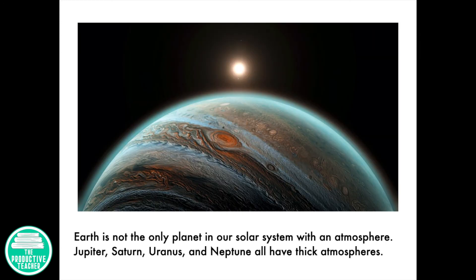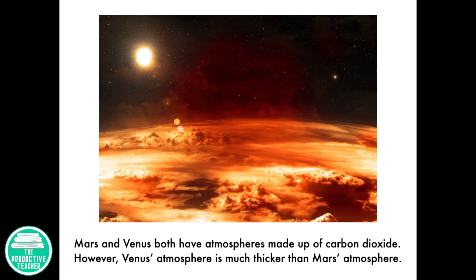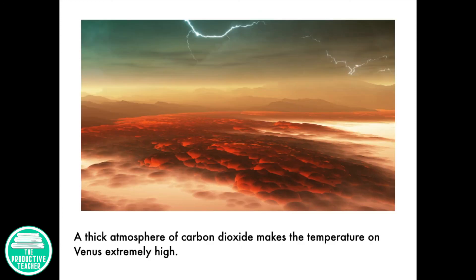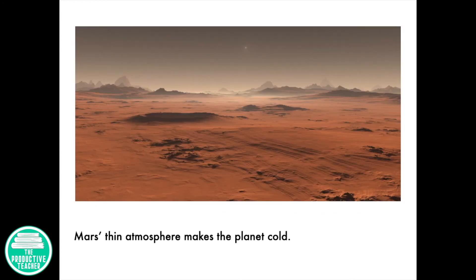Earth is not the only planet in our solar system with an atmosphere. Jupiter, Saturn, Uranus, Neptune all have thick atmospheres. Mars and Venus both have atmospheres made up of carbon dioxide. However, Venus's atmosphere is much thicker than Mars's atmosphere. A thick atmosphere of carbon dioxide makes the temperature on Venus extremely high. Mars's thin atmosphere makes the planet cold.